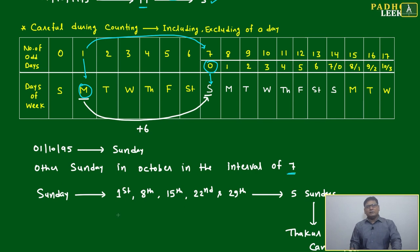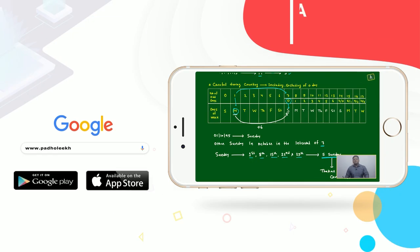Good - means other Sundays in the October are in the interval of seven. That is simple: first, then 8th, then 15th, 22nd, 29th. Total five Sundays. Means Thakur and Shambha can meet on any one of these Sundays: either it is 1st October, 8th October, 15th of the October, or 22nd of the October, or 29th.